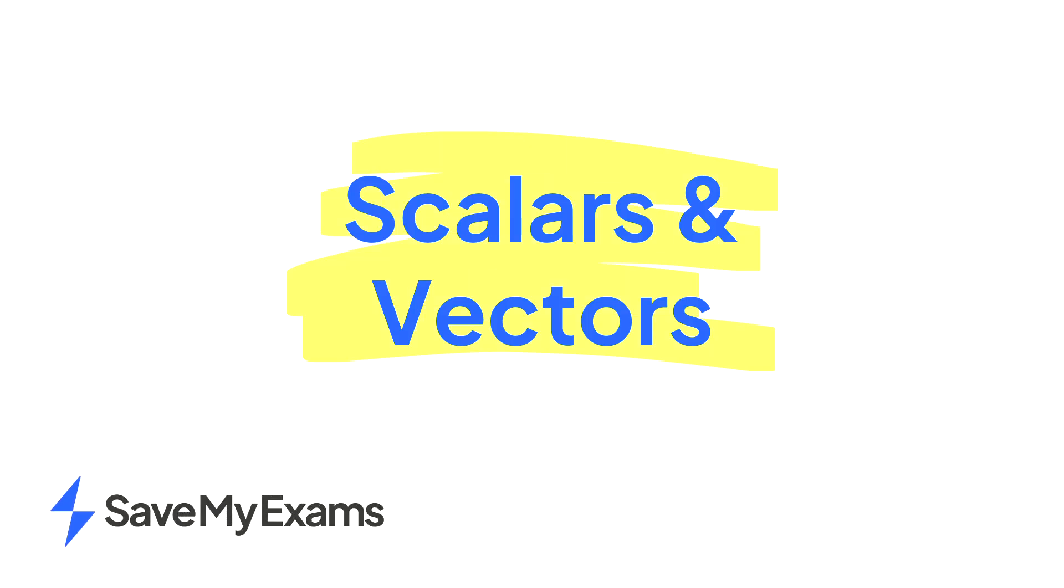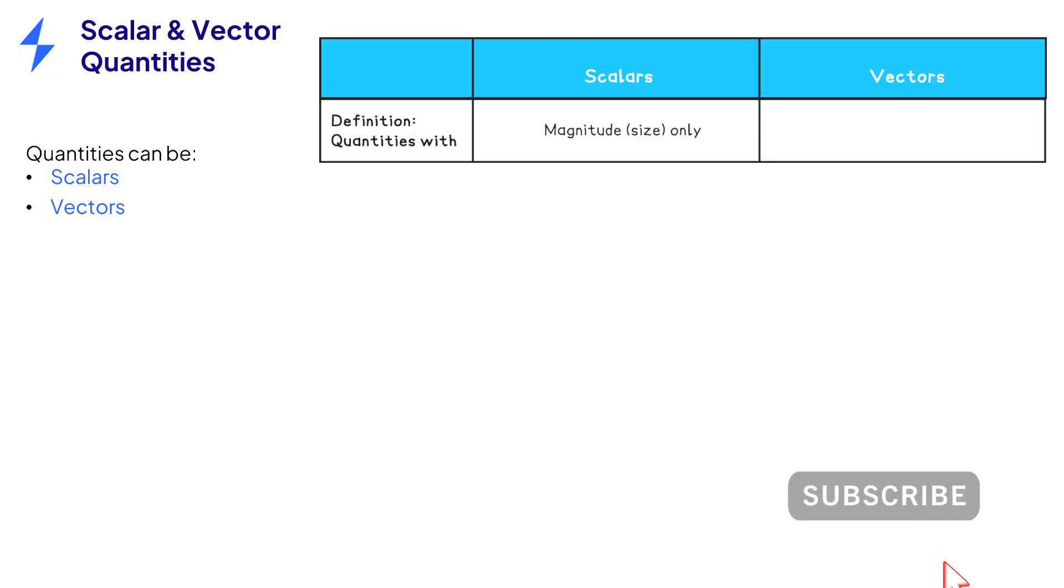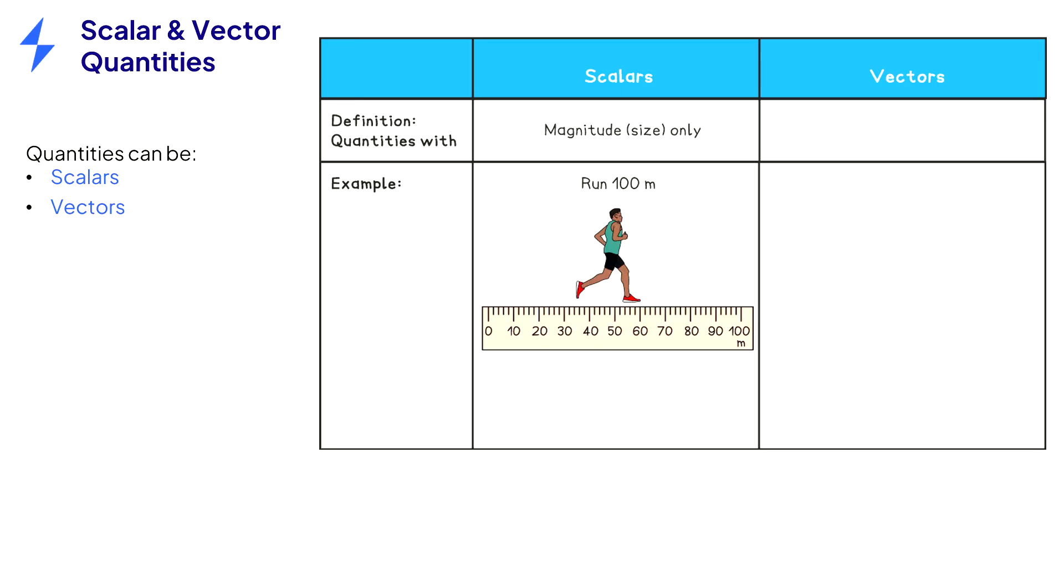This video is about understanding scalar and vector quantities. All physical quantities can be classified as scalars or vectors. Scalars have a magnitude or size only. For example, the athlete runs a distance of 100 meters.